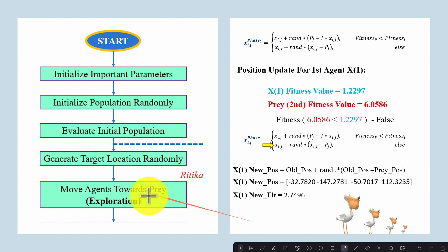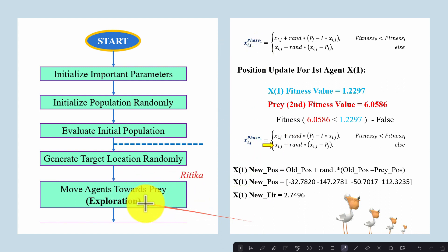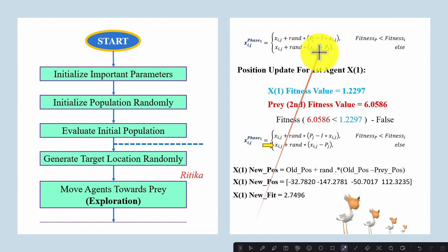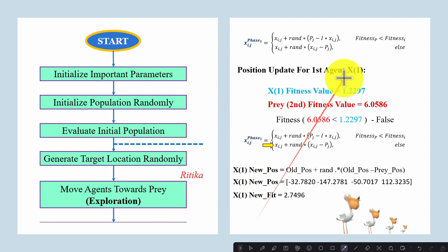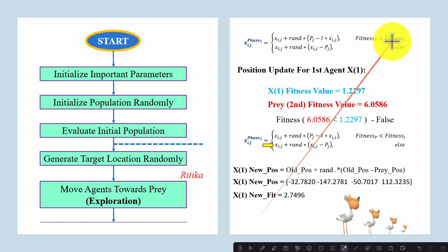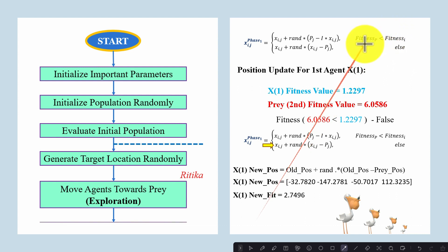Now we will update the agents' positions in the search space. Here we perform the exploration phase, where agents explore the search space. Using this mathematical model we update their positions. First, we will update the position for the first search agent. We check the agent's fitness value and then compare it with the target's fitness value.